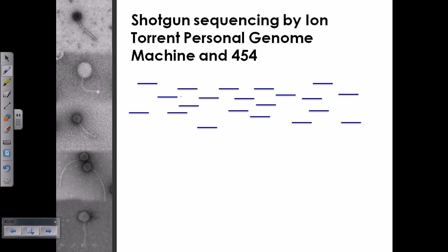These machines use shotgun sequencing, meaning you can sequence a huge amount of genome using this method. For example, the human genome contains billions of nucleotides, so we first break that long genome apart into smaller fragments using a physical shearing method.